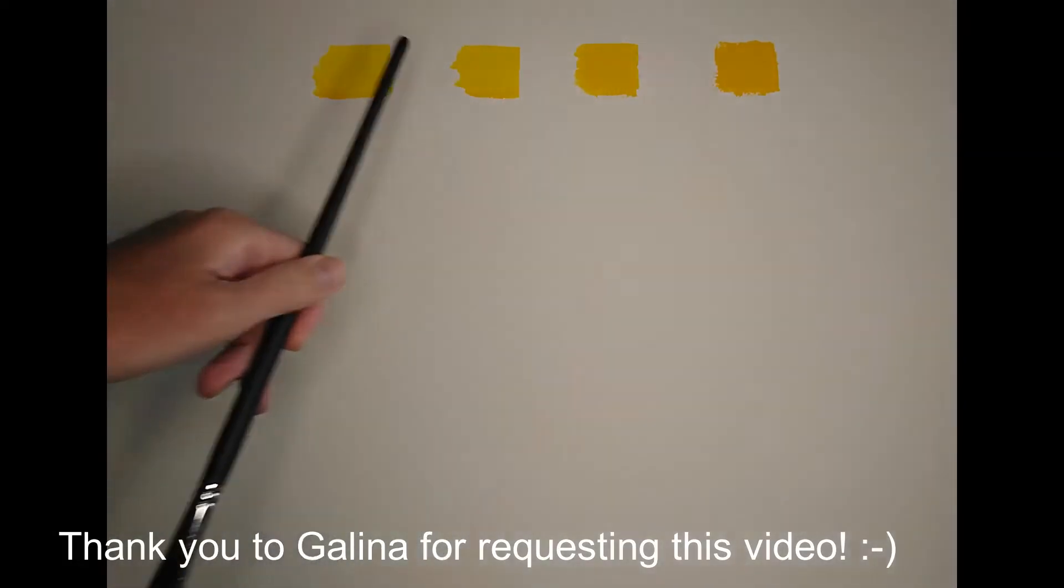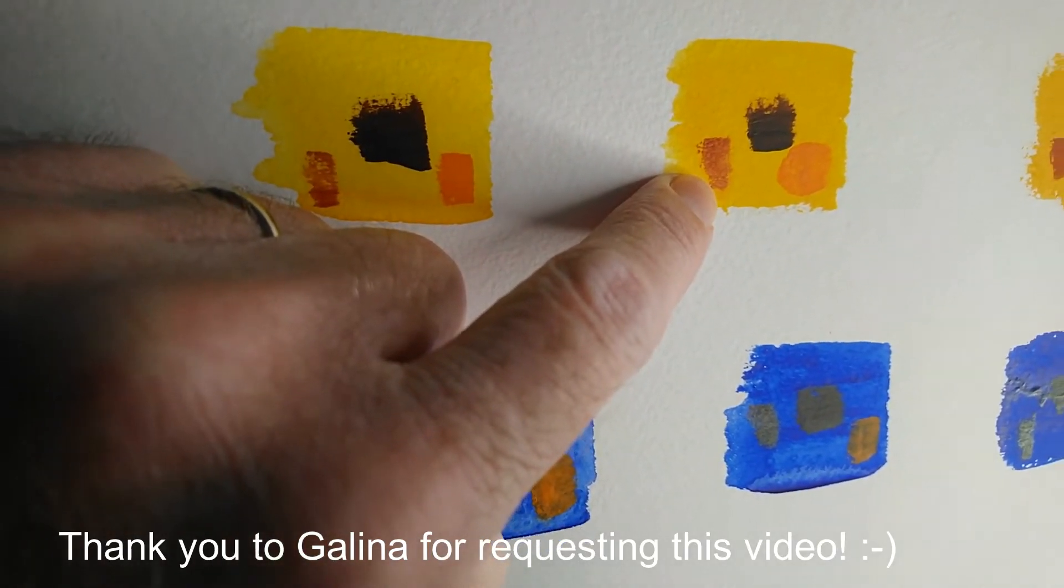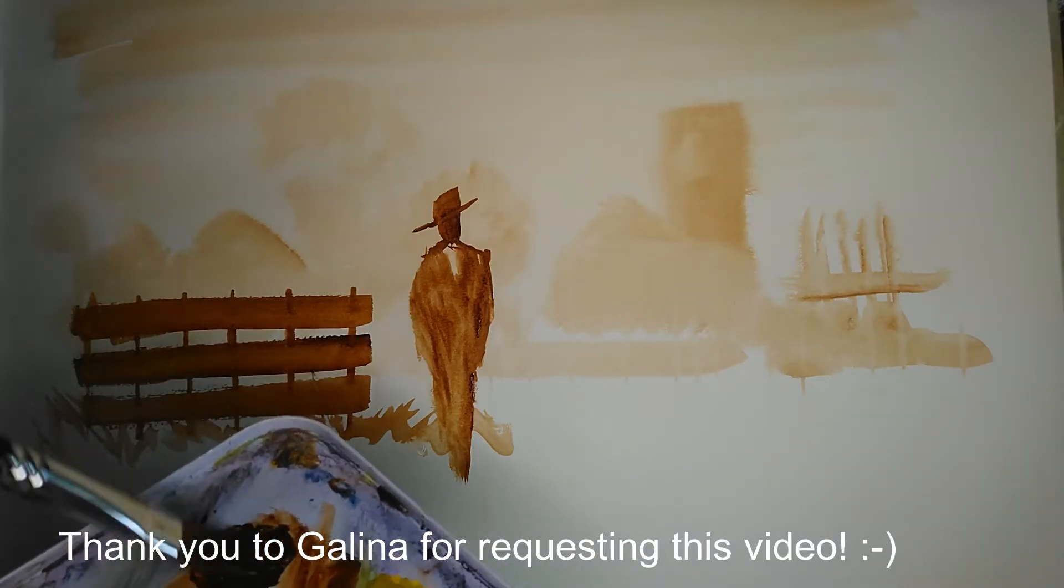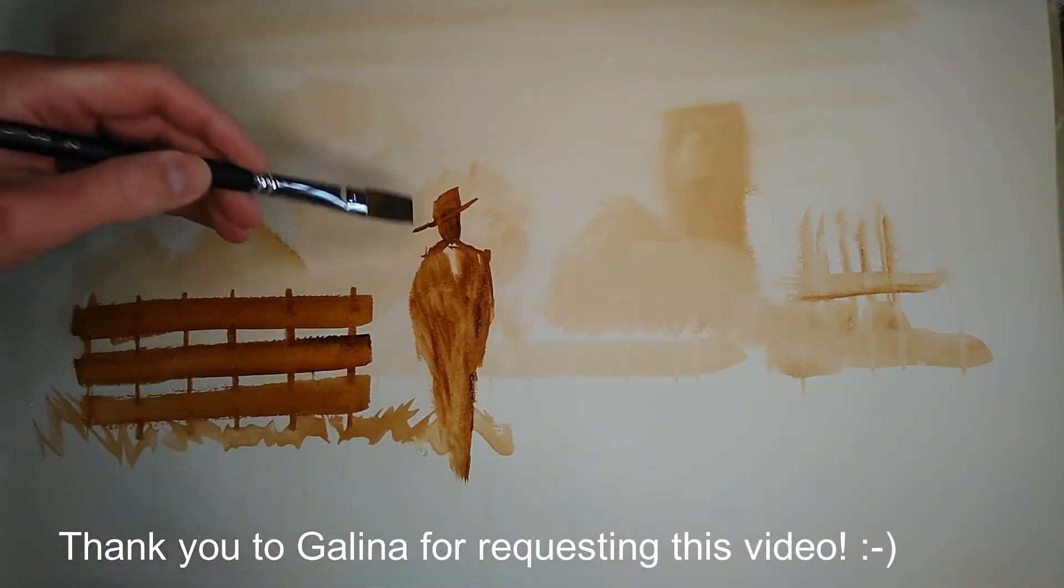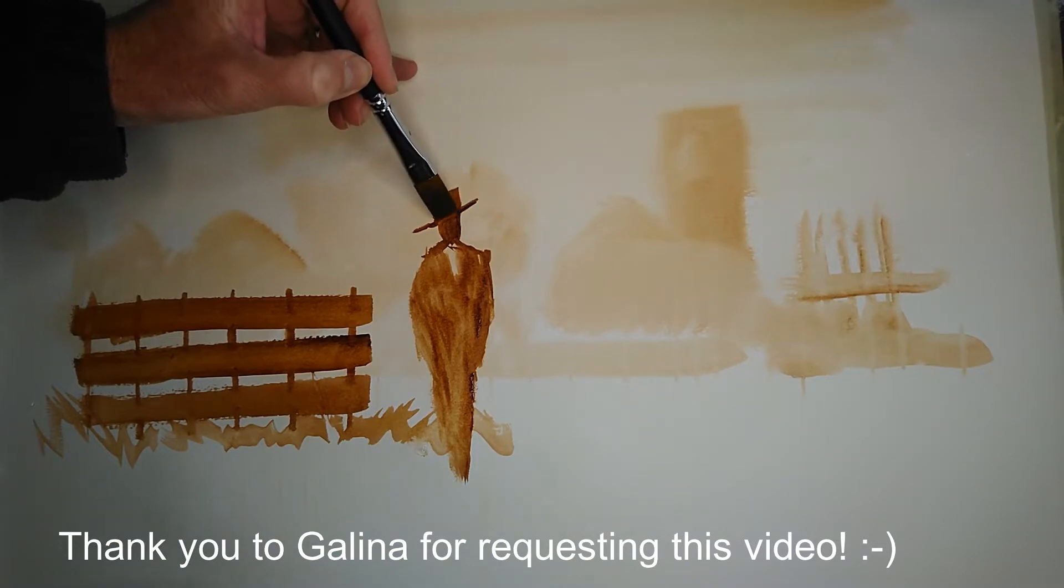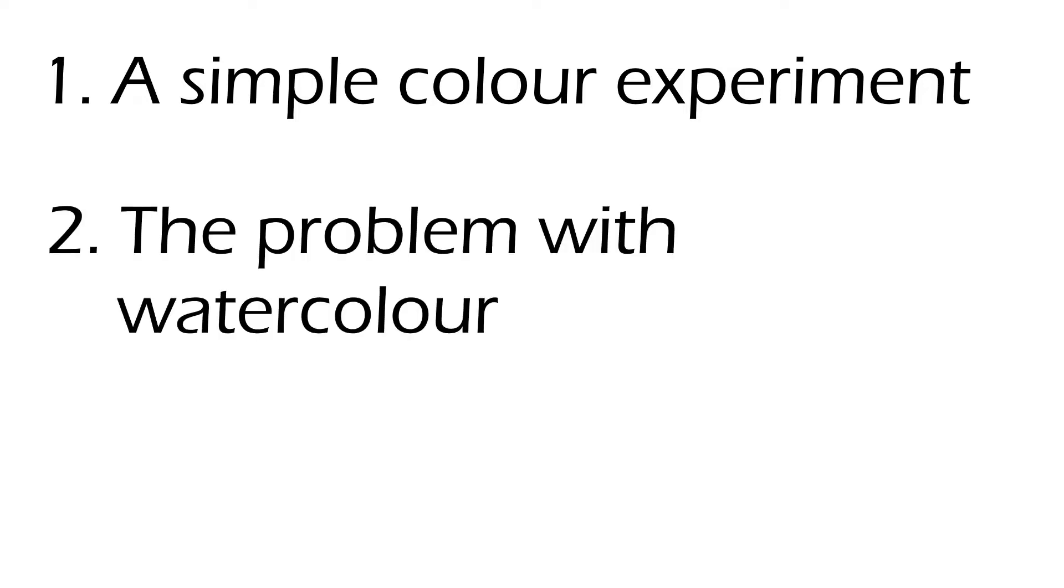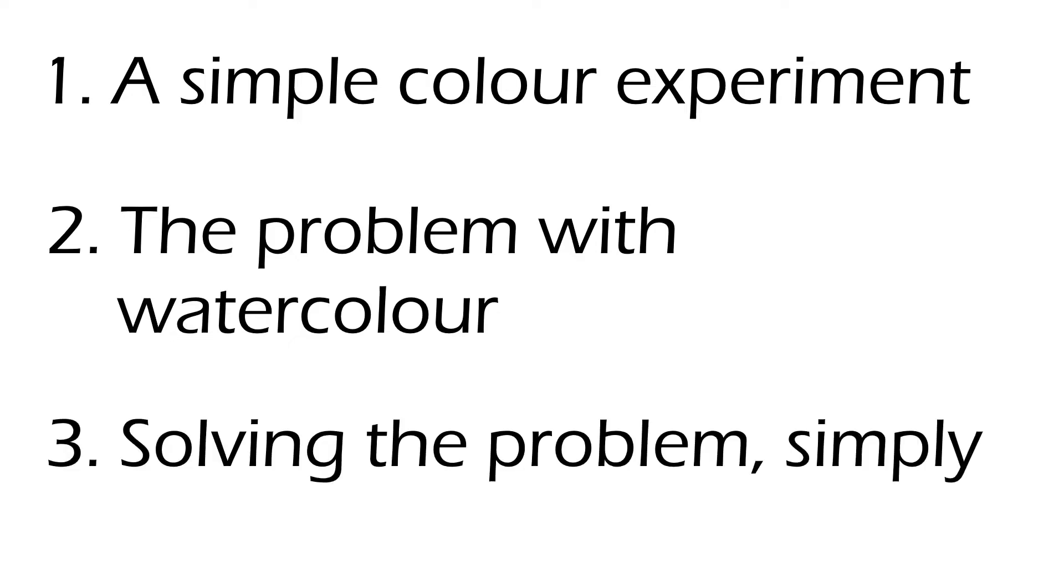In this video I'm going to show you a simple experiment which will allow you to get to grips with the different tonal values that can be achieved with watercolor paint. So this video is broken down into three parts. To begin with, I'm going to take you through a simple color experiment which will allow you to get used to how watercolors behave. Secondly, I'm going to briefly describe what I see as the main problem with watercolor, especially if you're coming to watercolor as a first-timer or perhaps you haven't painted with it for a while and you're used to using oils or acrylic. And then finally I'll show you how I go about solving the problem in a very simple fashion.